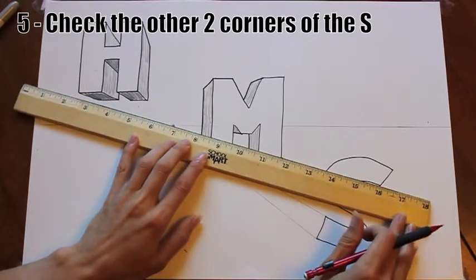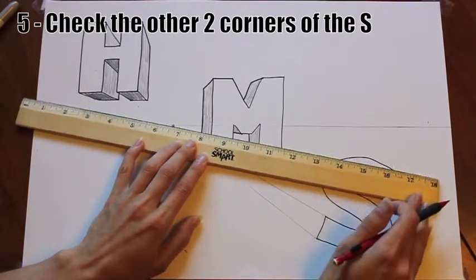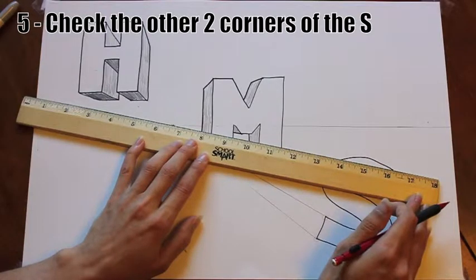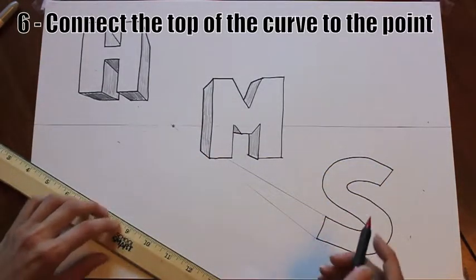You can check the other two corners on the letter S, but if you drew yours like mine, you cannot draw a line without starting it on the letter, which means we don't draw it.